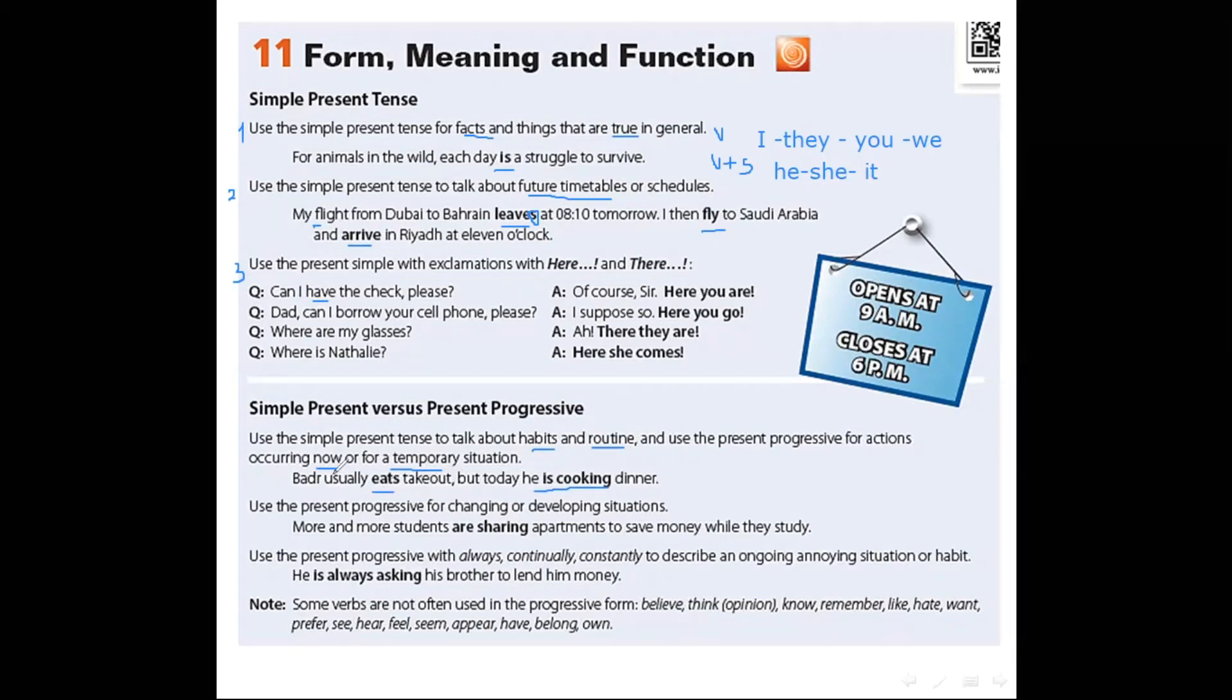Padra usually eats take out. Here we use simple present verb plus S. Why? Because it's a habit. Padra today, just today, it's not a habit. It's just today. He is cooking dinner. So we use present progressive. Verb to be plus ing. Excellent. Please write the notes. Present progressive form is verb to be, am, is, or are plus ing.